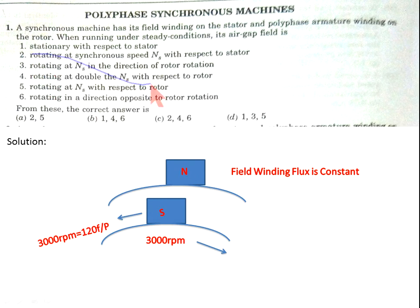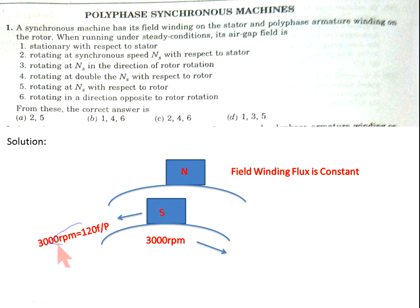Now come to statement number 1: air gap field is stationary with respect to stator. If we sit on the stator, we see the air gap field running at 3,000 rpm in one direction and the rotor running in the same direction, so the relative speed between them is 0. Therefore, the air gap field is stationary with respect to stator — statement 1 is correct.